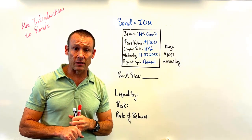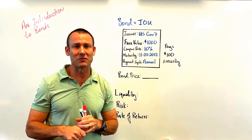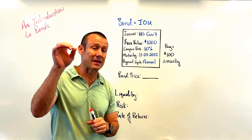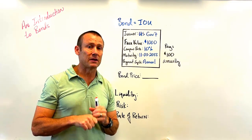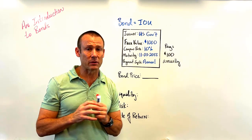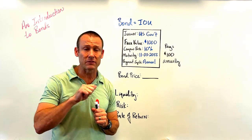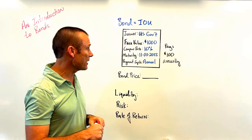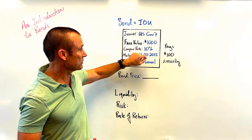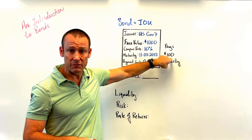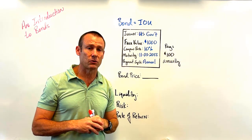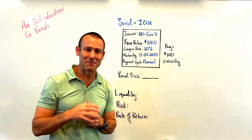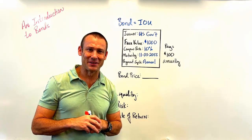A bond is an IOU — a debt contract — something that expires. It is not a stock. It's not an equity position, it doesn't last forever, and it doesn't give anybody a right to profits. It gives a person a right to the coupon rate times the face value — a fixed interest payment — for a fixed amount of time. Hope that made sense. We'll see you in the next video.